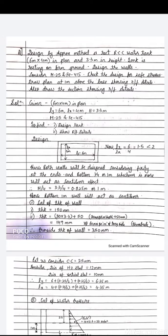Bottom H/4 or 1 meter, whichever is more, will act as a cantilever effect. H/4 comes out to 0.825 m, so 1 meter is the higher value. Hence the bottom 1 meter will act as a cantilever.